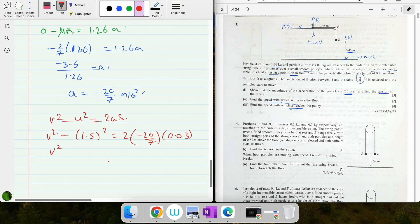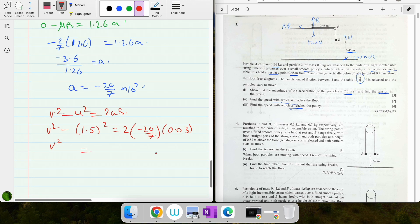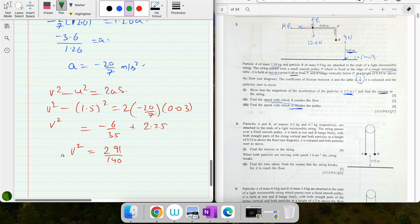2 into acceleration is minus 20/7, and displacement to be covered is 0.03 meters. So v² equals 2 times 20/7 times 0.03 is 6/35, and 1.5 squared is 2.25. So 2.25 minus 6 divided by 35 is a lot of numbers, so keeping it in fraction: 291/140. Square root both sides, I get 1.44 meters per second.